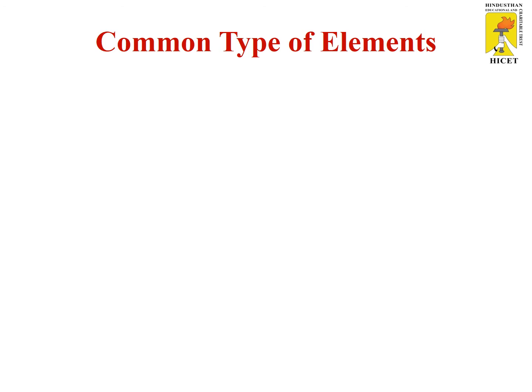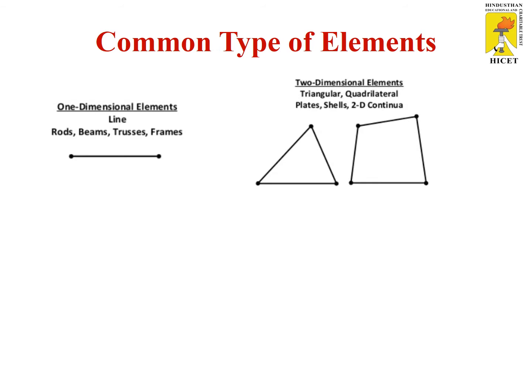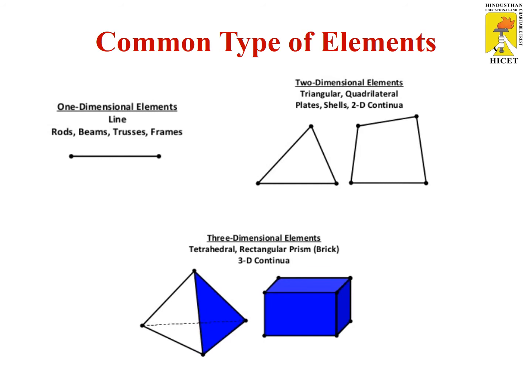Common types of elements: one-dimensional elements represent rods, beams, trusses, and frames — these have two node points. Two-dimensional elements include triangular, rectangular pieces, quadrilateral plates, or different shapes with two-dimensional objects. Three-dimensional elements use prisms, pyramids, and box structures. These are the three element types used for analysis: one-dimensional, two-dimensional, and three-dimensional elements.